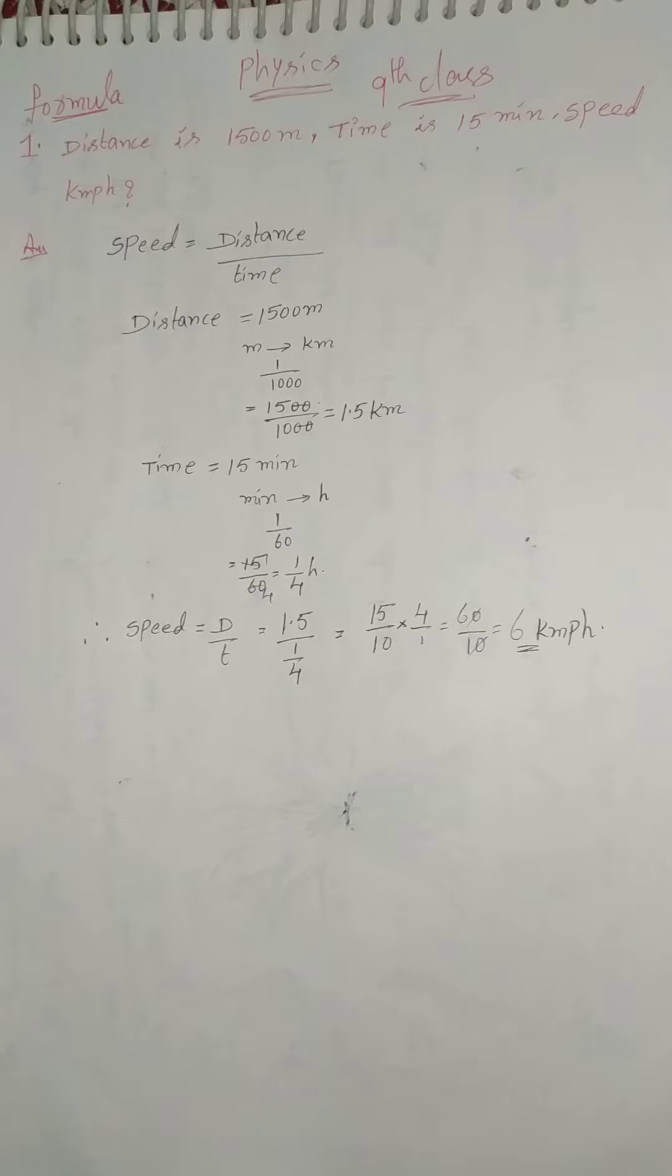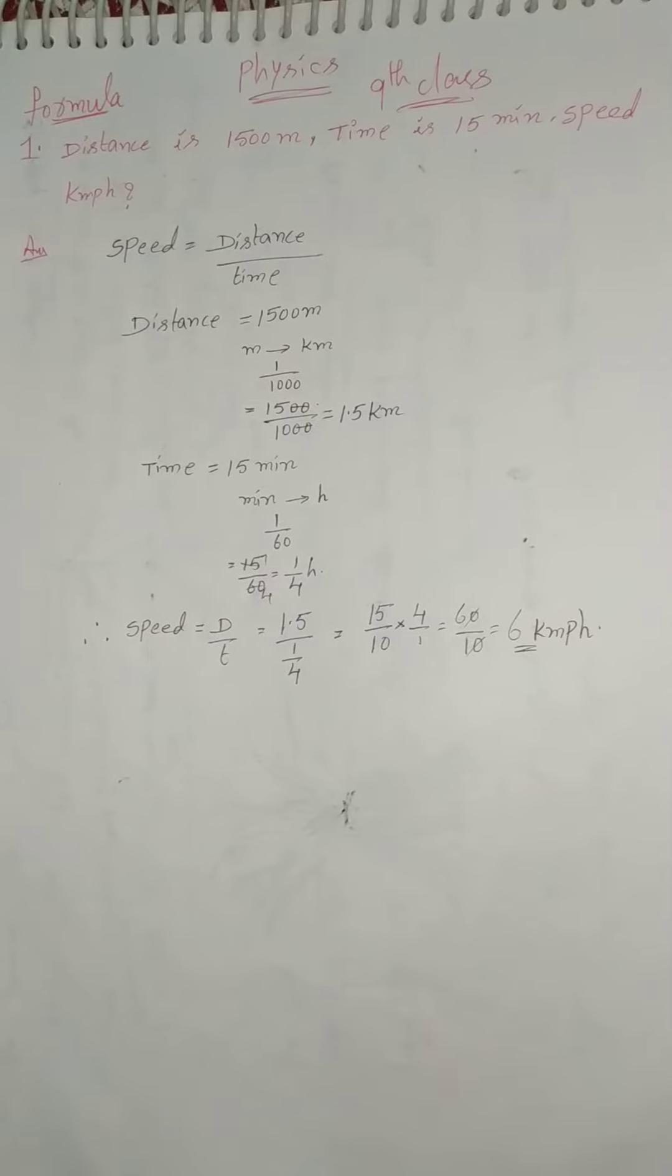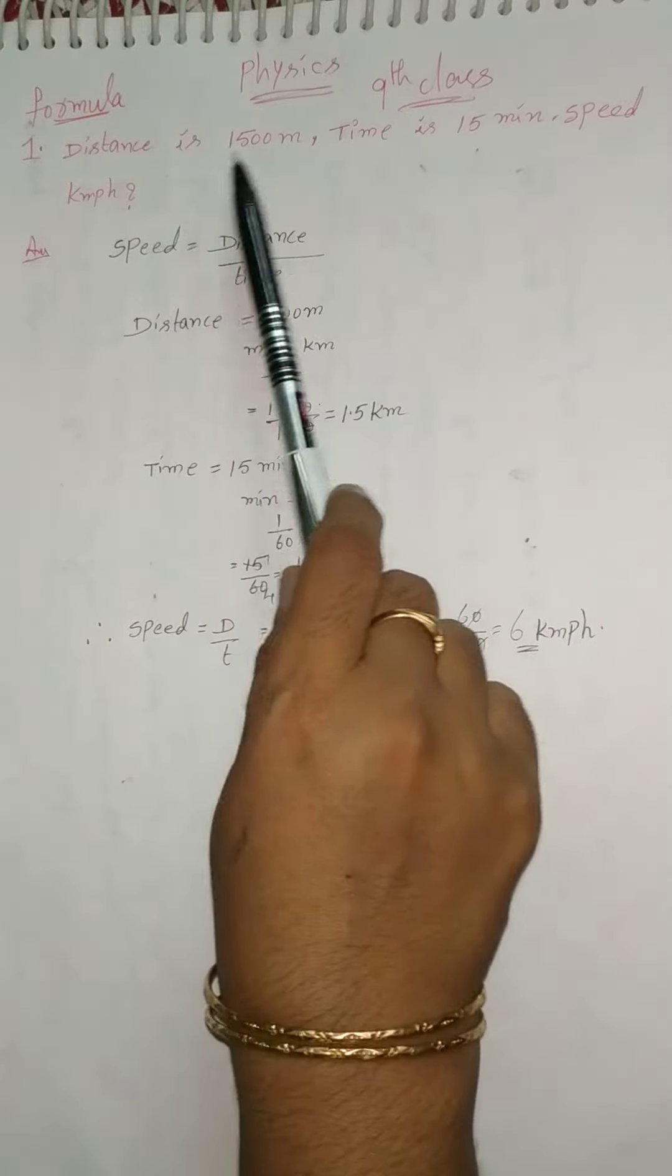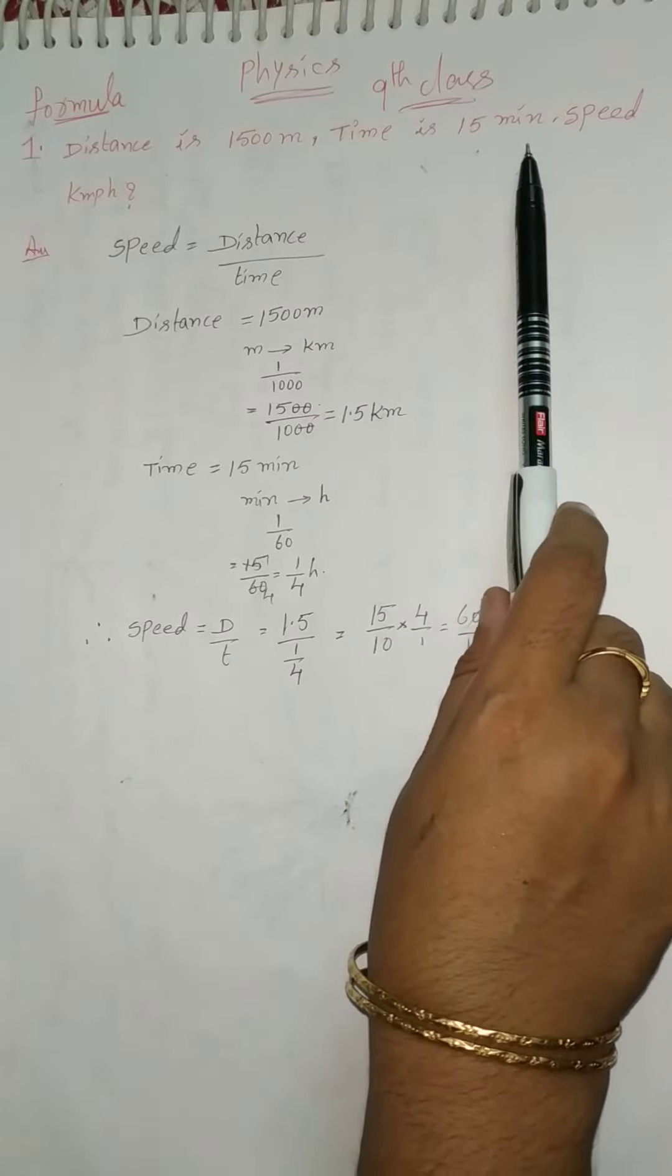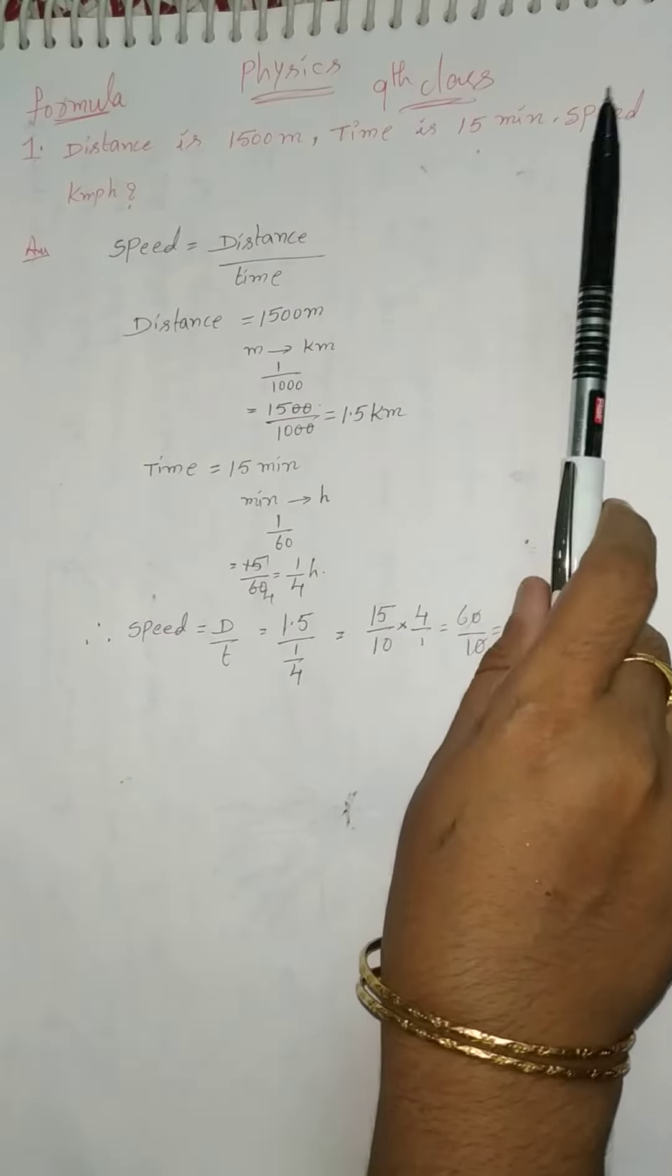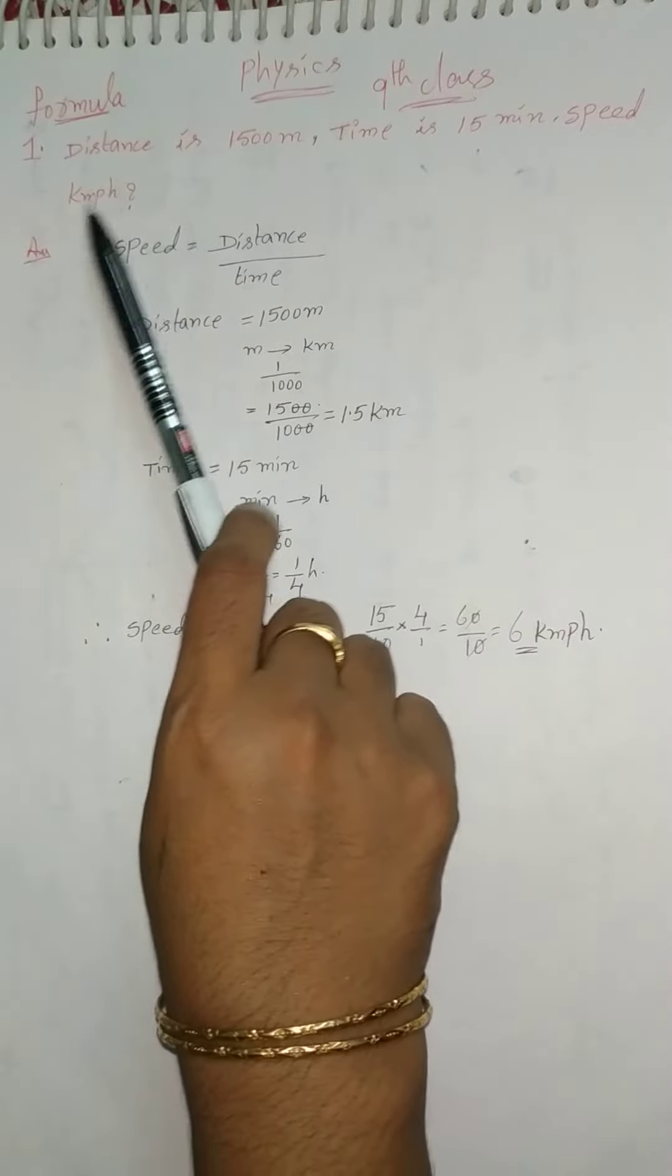Hello everyone, welcome to my channel Book of Science. Today I am teaching about physics 9th class problems, formulas, and problems. Distance is 1500 meters, time is 15 minutes, find the speed value in kilometer per hour.